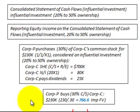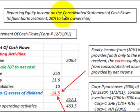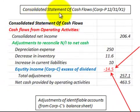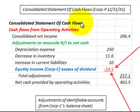Now we can look at how we'd report this equity income on the consolidated statement of cash flows. Again, this is for an influential investment with 20 to 50 percent ownership — in this case, corporation P with a 30 percent ownership in corporation C. Our consolidated statement of cash flows is for corporation P at year-end 12/31/X1, since they purchased corporation C on 1/1/X1.